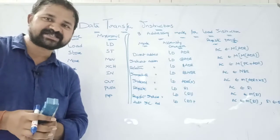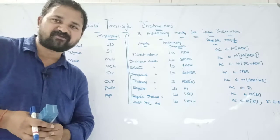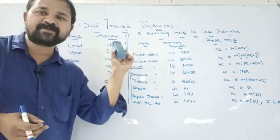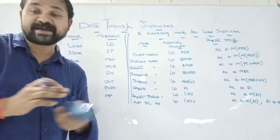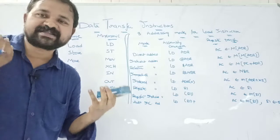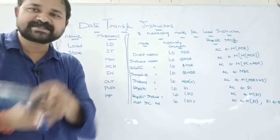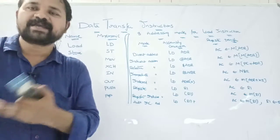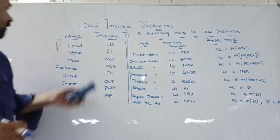Data transfer instructions are useful to transfer data from one location to another location without changing its content. Mainly by using data transfer instructions we can transfer data between different memory locations, between one memory location to another, between registers, from memory to register or register to memory, or between registers and input/output devices.